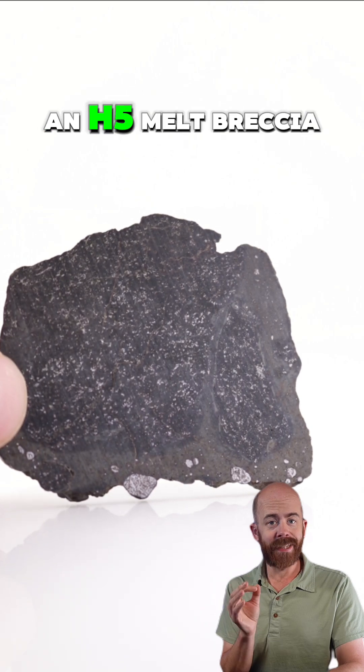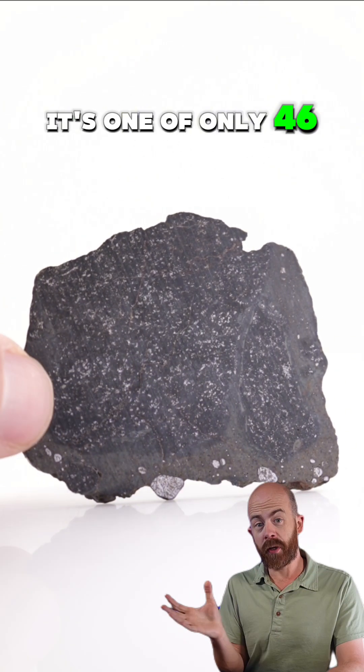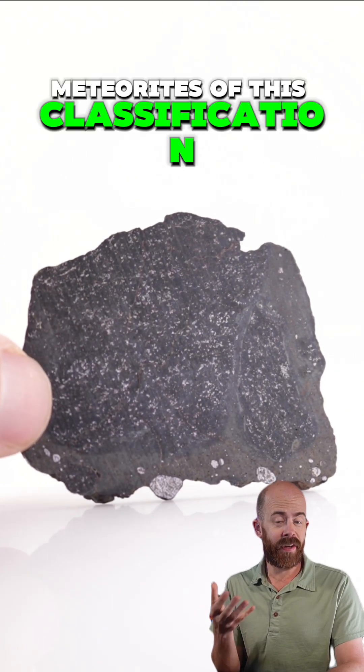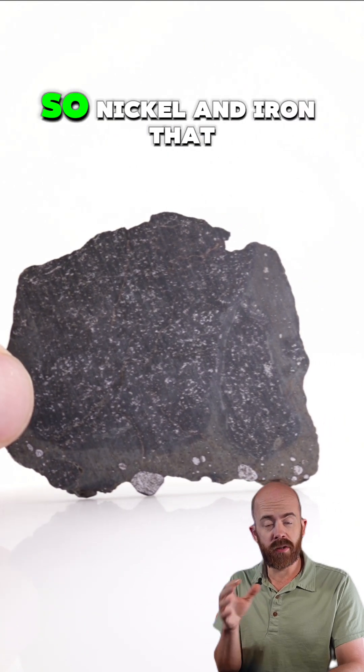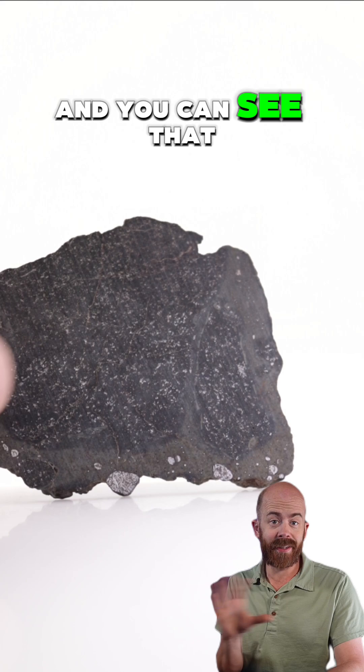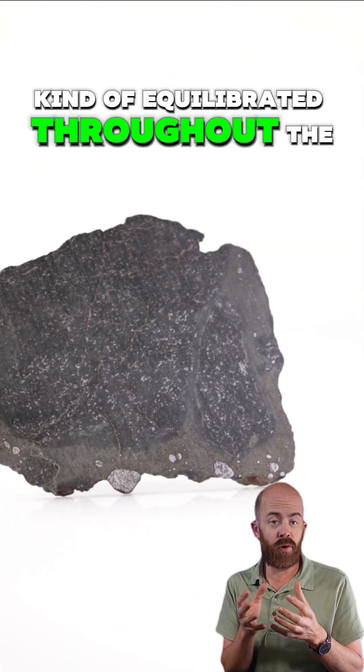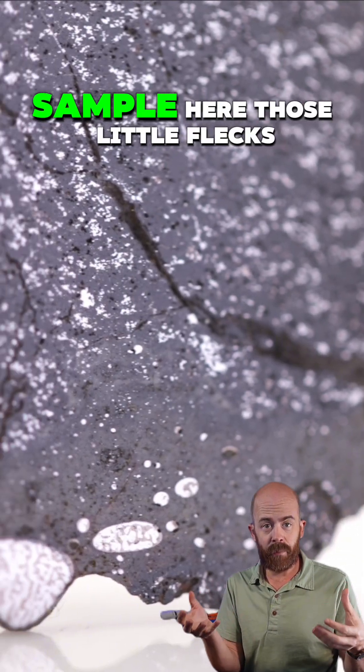This meteorite is classified as an H5 melt breccia. It's one of only 46 meteorites of this classification. The H here refers to the high amount of metal, so nickel and iron that are in the meteorite, and you can see that kind of equilibrated throughout the meteorite sample here.